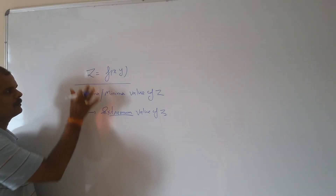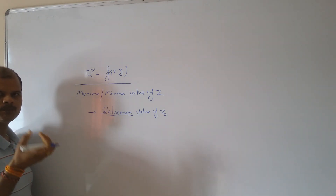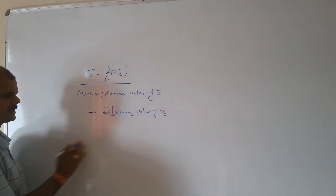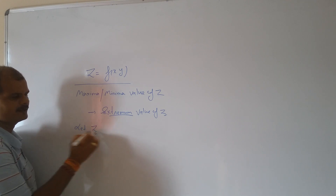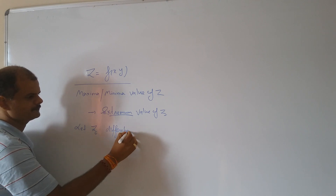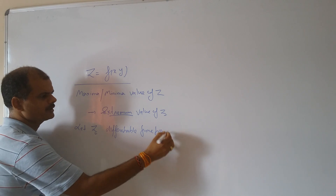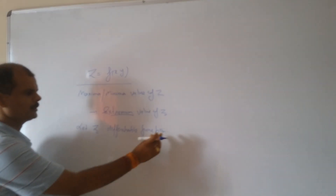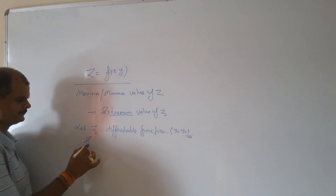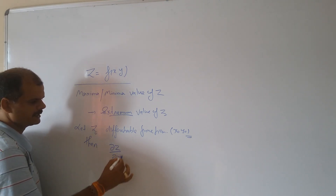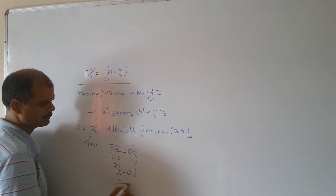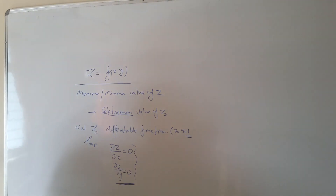What is the necessary condition for z? Suppose one point is given as (x₀, y₀). When that point is an extrema point, and z is a differentiable function with all partial derivatives existing, then the partial derivative del z by del x equal to 0 and del z by del y equal to 0 at the point (x₀, y₀).